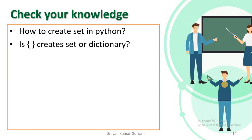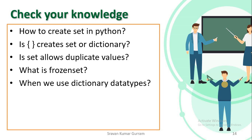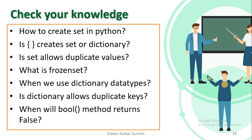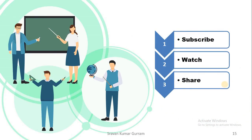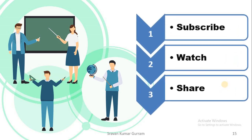Check your knowledge from this video: How do you create a set in Python? Does an empty brace create a set object or a dictionary object? Does a set allow duplicate values? What is a frozenset? When do we use dictionary data types? Does a dictionary allow duplicate keys? When does the bool() method return False? If this video is useful, please subscribe, watch, and share. Thank you.